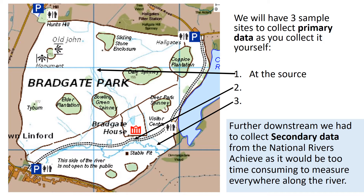At Bradgate Park we collected data from three sample points. The first sample point was right near the source at the top of the tributary, and then at two points further downstream. It would be far too time consuming to take measurements all the way to where the river meets the sea, so beyond what's shown on this map we used data from the National Rivers Archive as our secondary data.